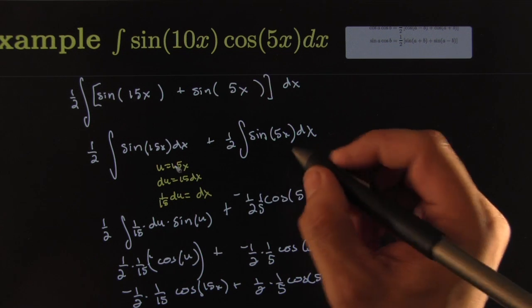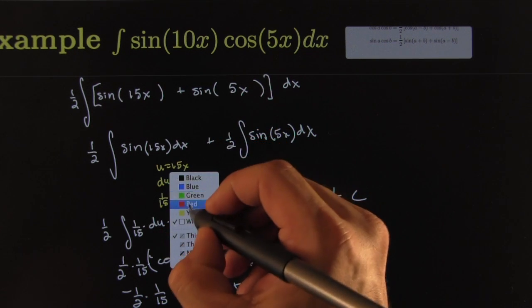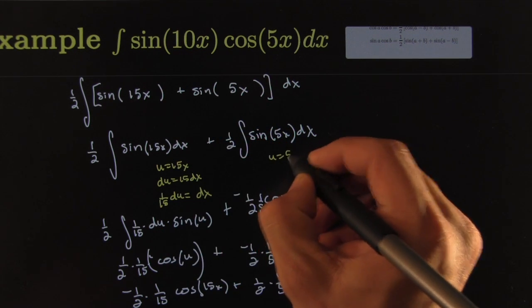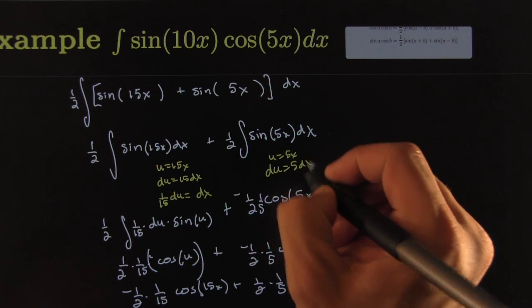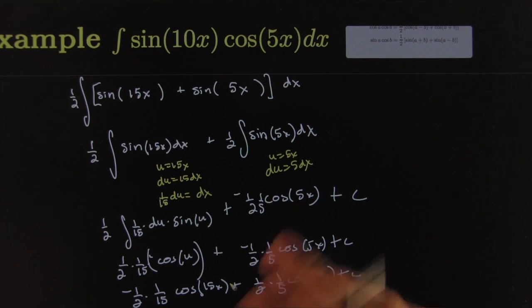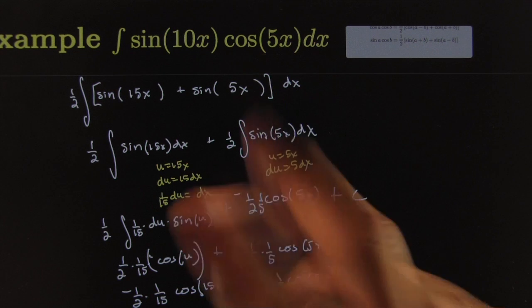After that it's just a couple of easy u-subs. I would do a u-sub there, and of course the u-sub we did here, u equals 5x, du equals 5dx, etc. Alright, that's not so bad. We'll see you guys next time, peace.